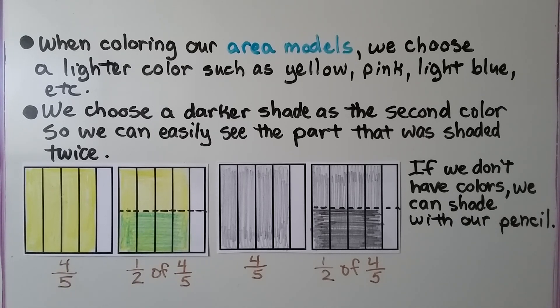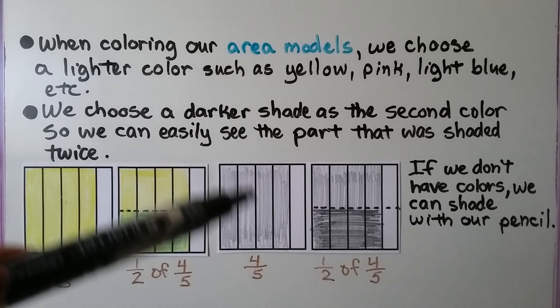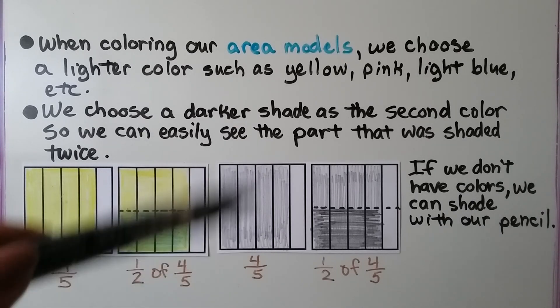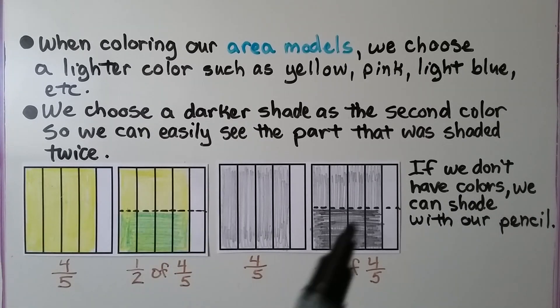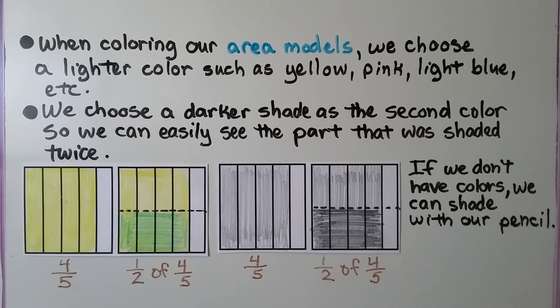We can easily see the area that was shaded twice. If you don't have colors, you can shade lightly with a pencil for the first shading and then shade darker with the pencil for the second color.